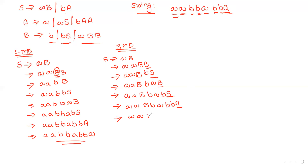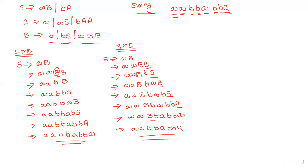Finally, capital A is replaced with small 'a', completing the string 'aabbabba'. This is the rightmost derivation for the given grammar. In summary: if scanning left to right, we replace the leftmost variable first — that is leftmost derivation. If replacing the rightmost variable first and scanning right to left — that is rightmost derivation. These are the two derivations of a context-free grammar.